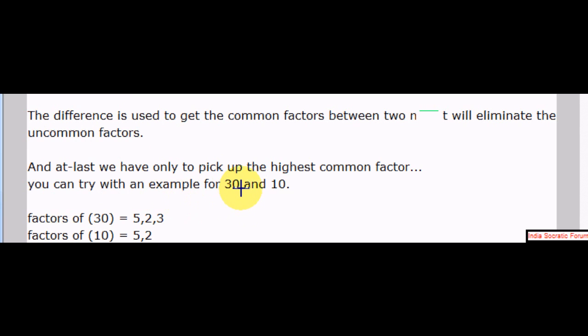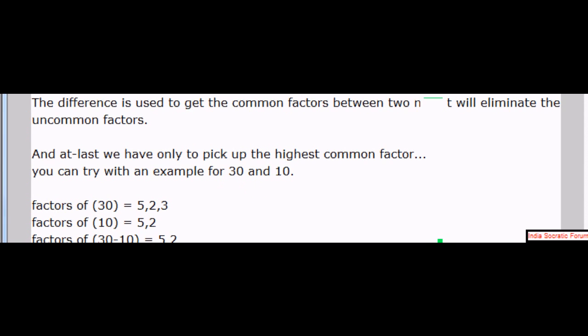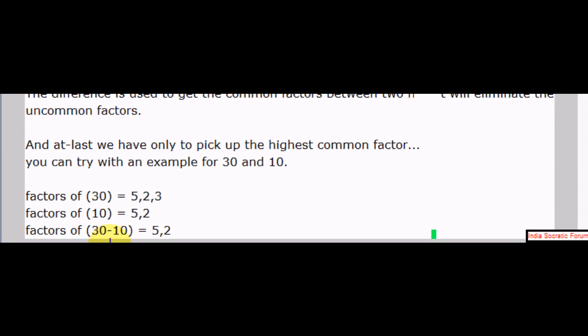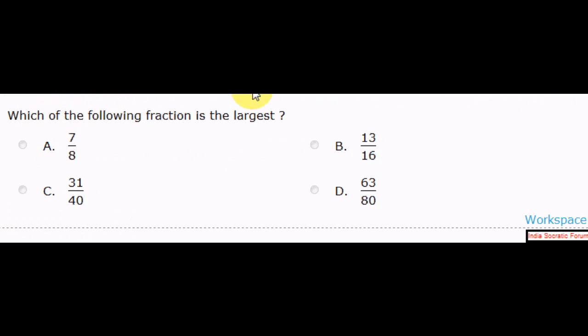And at last, we have to pick up the highest common factors. So uncommon factors will be gone when we subtract these two numbers. Okay. Then you can try with the same example. For example, if you take factors 30, 10 and this thing, you can see the factorization. You can take the highest common factor.